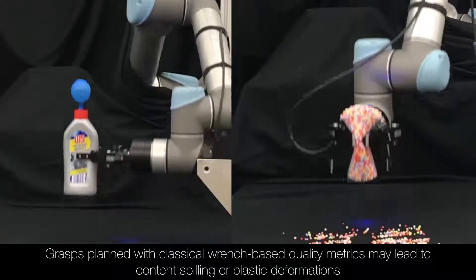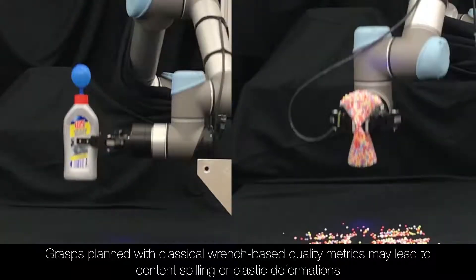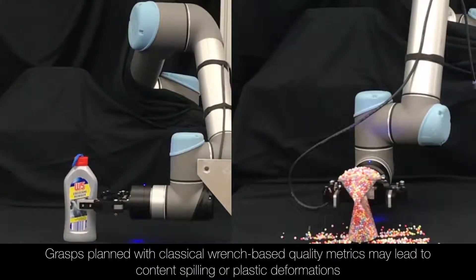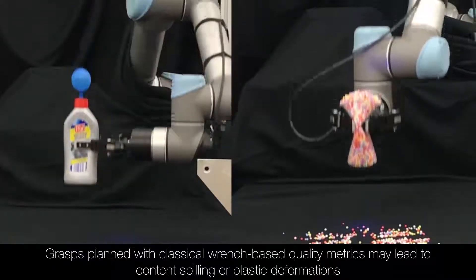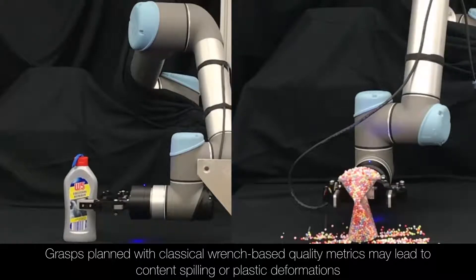Grasping deformable hollow objects like plastic bottles and cups is challenging. The grasp should resist disturbances while minimally deforming the object to avoid damaging it or dislodging liquids.